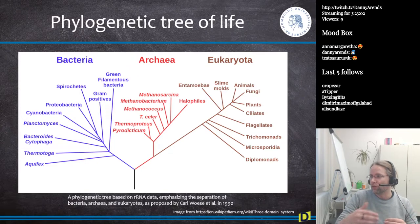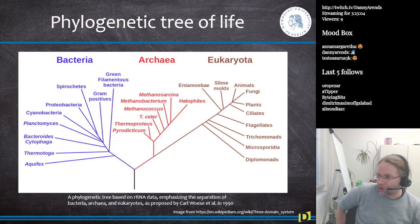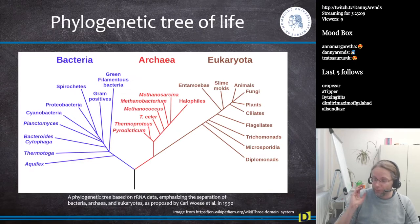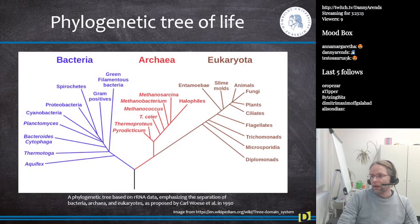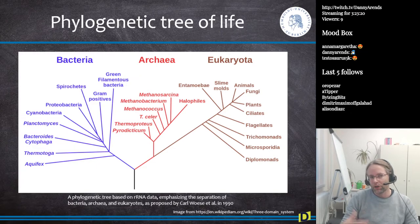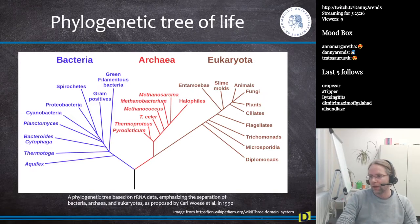When you make a phylogenetic tree based on rRNA, it emphasizes the separation of bacteria, archaea, and eukaryota because ribosomal RNA is very stable — it doesn't mutate very much because ribosomes are a very essential part. You can look very far back in history this way. If you did the same thing for proteins you wouldn't look back as far, and you wouldn't see the big split in bacteria or eukaryota.